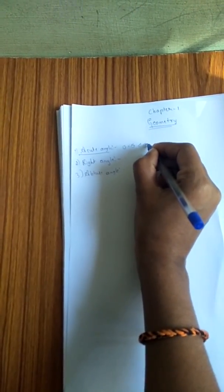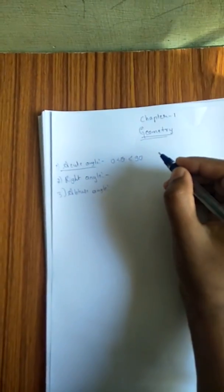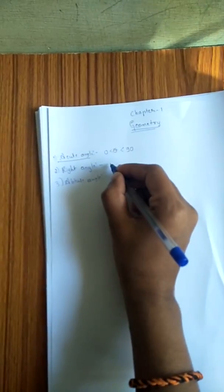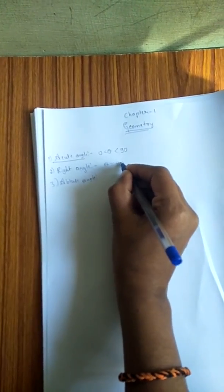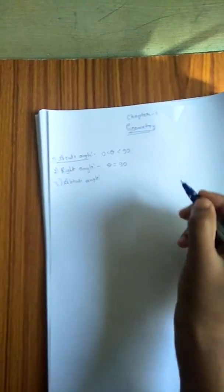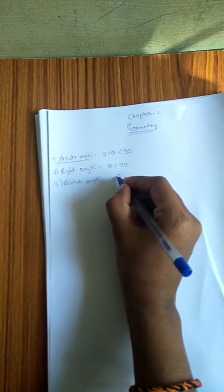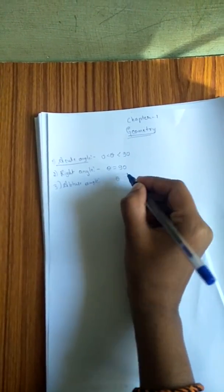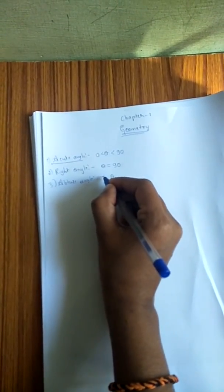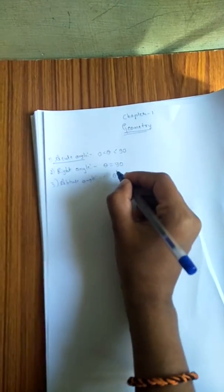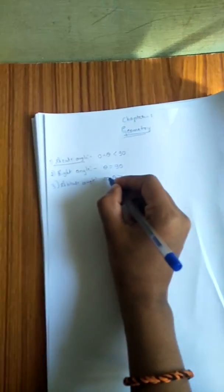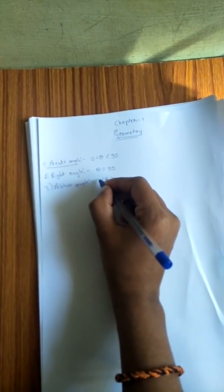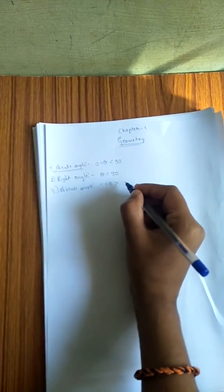0 to 90 degrees. Acute angle is 0 to less than 90. Theta equals 90 is right angle. Third one, obtuse angle.